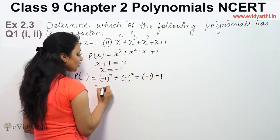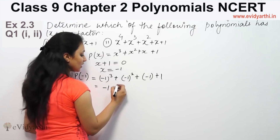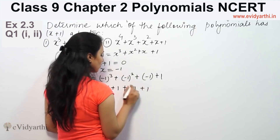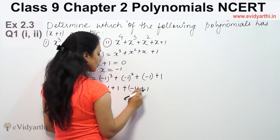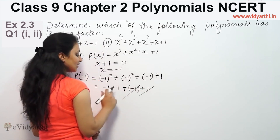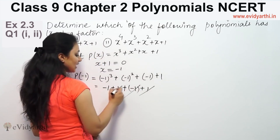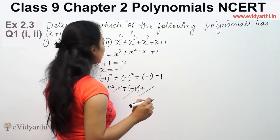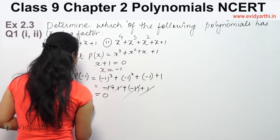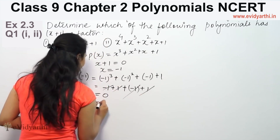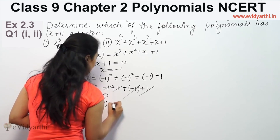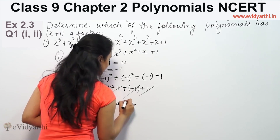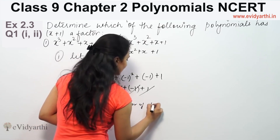So, P(minus 1) equals minus 1 cubed plus minus 1 squared plus minus 1 plus 1. Minus 1 cubed is minus 1, and minus 1 squared is plus 1. So we have minus 1 plus 1 plus minus 1 plus 1. The positive and negative terms cancel out, giving the answer 0. That means x plus 1 is a factor of P(x).